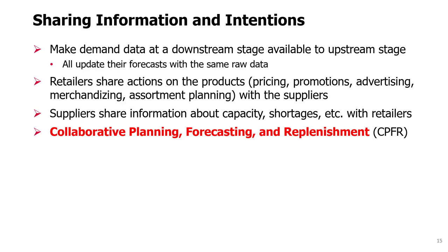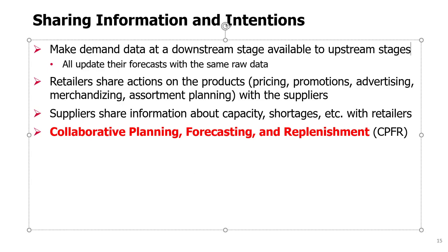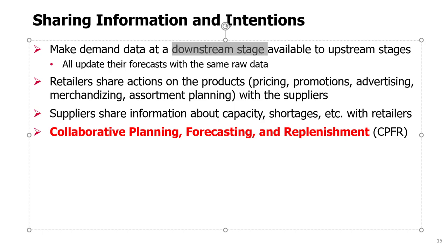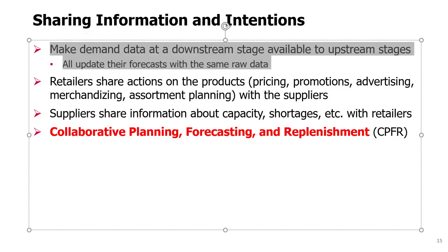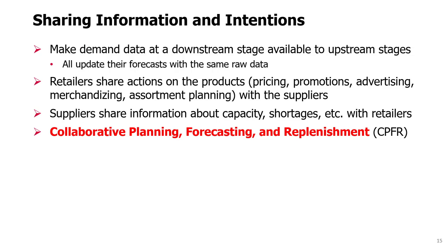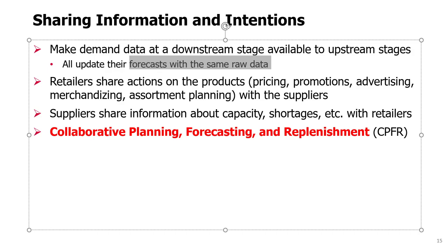The first strategy is sharing information and intentions. The upstream stages in the supply chain should have information about demand at the lowest stage of the supply chain. If a retailer shares information about actual sales to consumers with distributors and the manufacturer, then these higher stages can actually have better forecasts because they update with the same raw data.